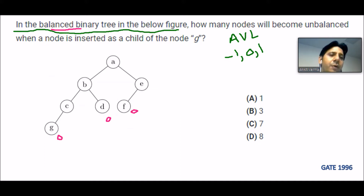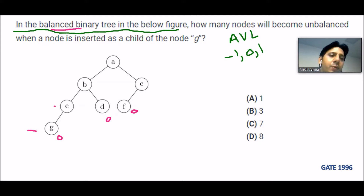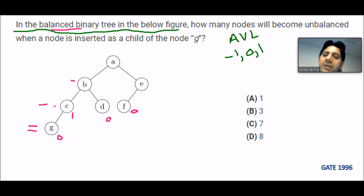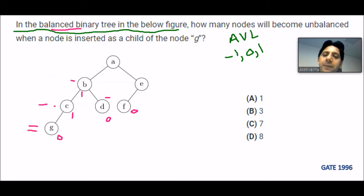For node C: on the left hand side there is one level and on the right hand side there is no level, so 1 minus 0 is 1 — the balancing factor of C is 1. For node B: on the left hand side there are two levels (G and D) and on the right hand side there is only one level (D), so 2 minus 1 is 1 — the balancing factor of B is 1.